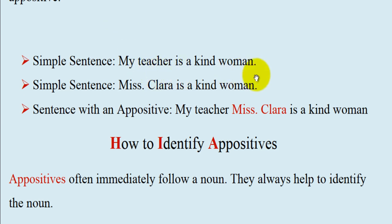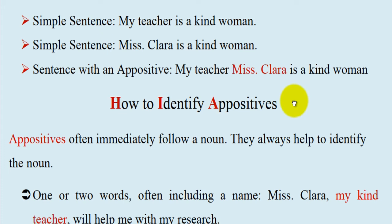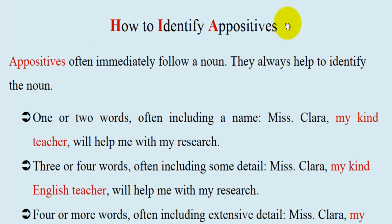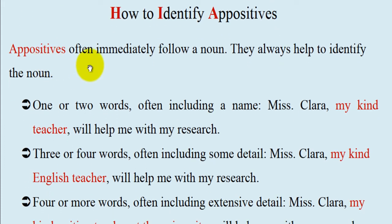Simple sentence: 'My teacher is a kind woman.' Simple sentence: 'Miss Clara is a kind woman.' Sentence with appositive: 'My teacher Miss Clara is a kind woman.' So the appositive here is 'Miss Clara.'